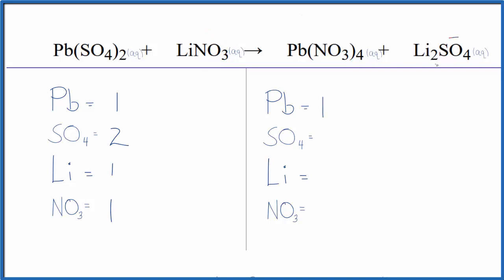One lead, one sulfate, two lithium atoms, and then one nitrate times four gives me four nitrates. A lot easier to work with.